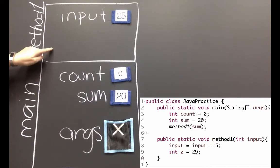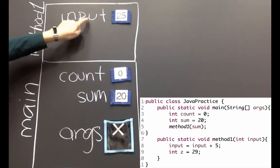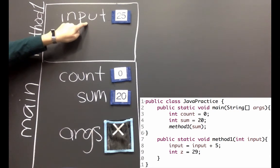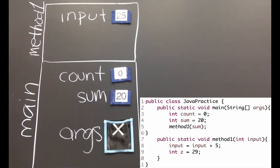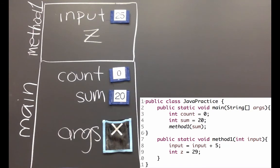Since input was passed as an argument, that's one of the local variables inside of method one. After we update the value of input, we also created another variable called z. We gave z the value 29.